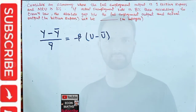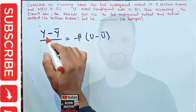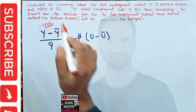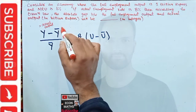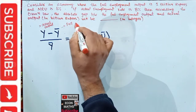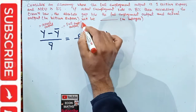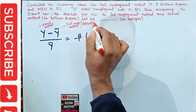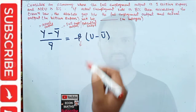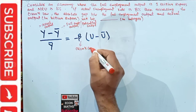Now, what are these symbols? 'y' denotes our actual output. 'y-bar' (or y-hat) denotes our full employment output, which we also call the potential output. 'Beta' here is our Okun's coefficient.